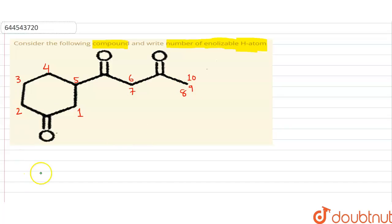If we see the total number of enolizable H atoms in this particular compound, then that is the total number of 10 hydrogen atoms.